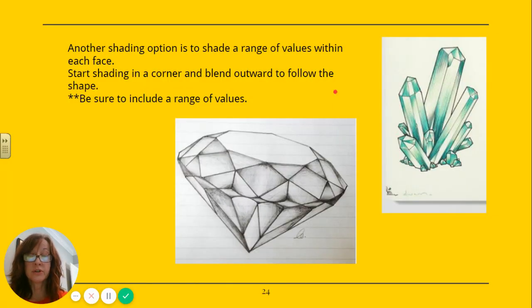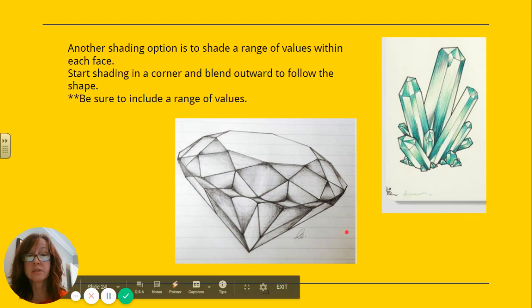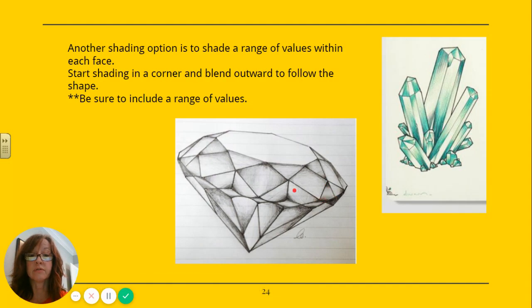Another shading option for the crystals is to shade a range of values within each face of the crystal. So picking a corner, shading, and blending up or down in different directions. This is going to work better if you draw a more complex crystal. If it's really simple, you may want to go with the other one. But even on this, this is just on line paper, an example I found. So picking an edge or a corner and shading and blending out in different directions just to kind of make it seem more 3D.